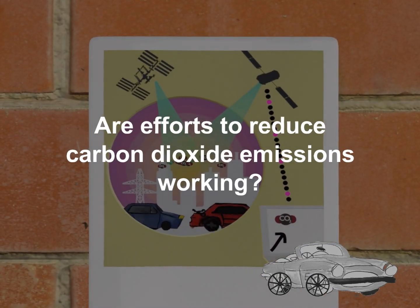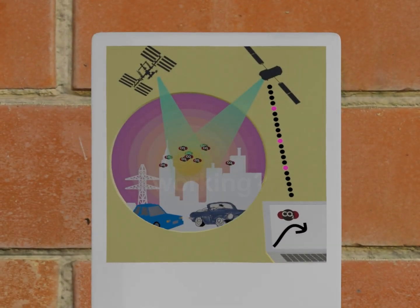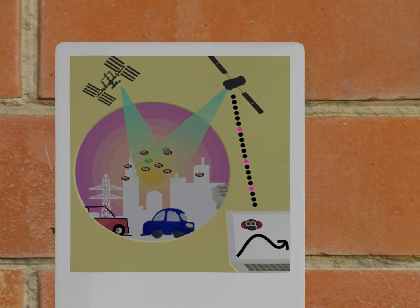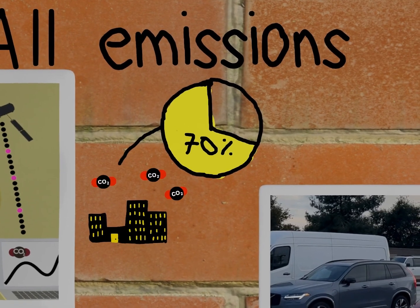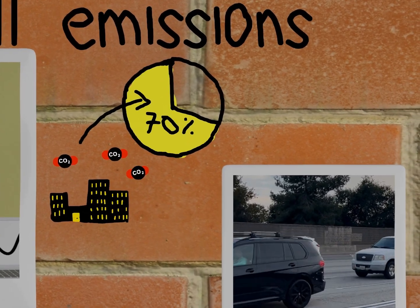Are efforts to reduce carbon dioxide emissions working? NASA research might have an answer. Right now, almost 70% of all carbon dioxide emissions come from cities and their surroundings.